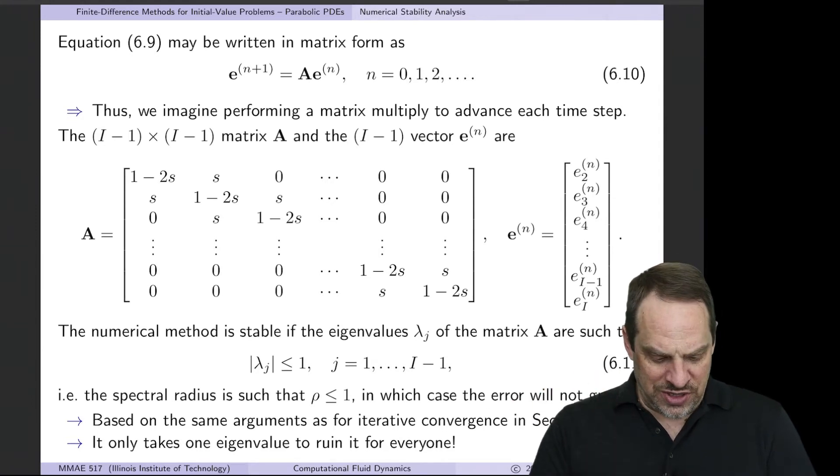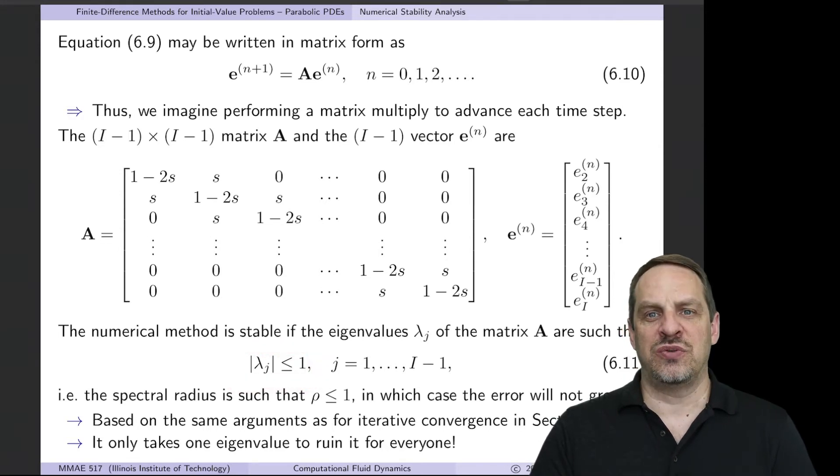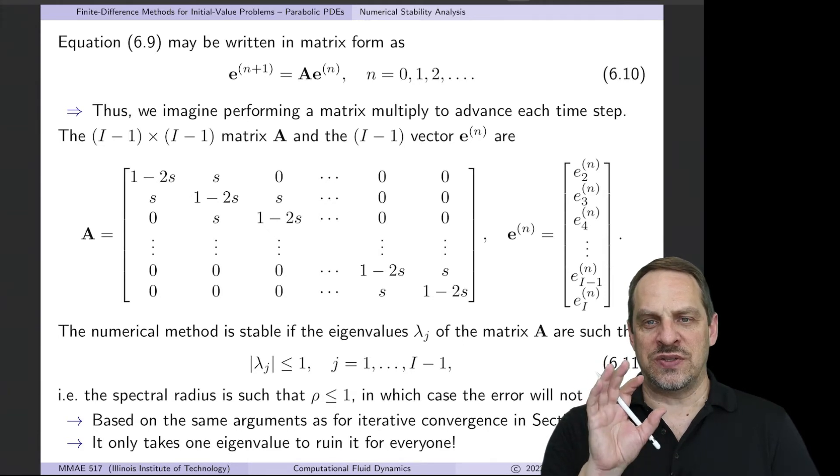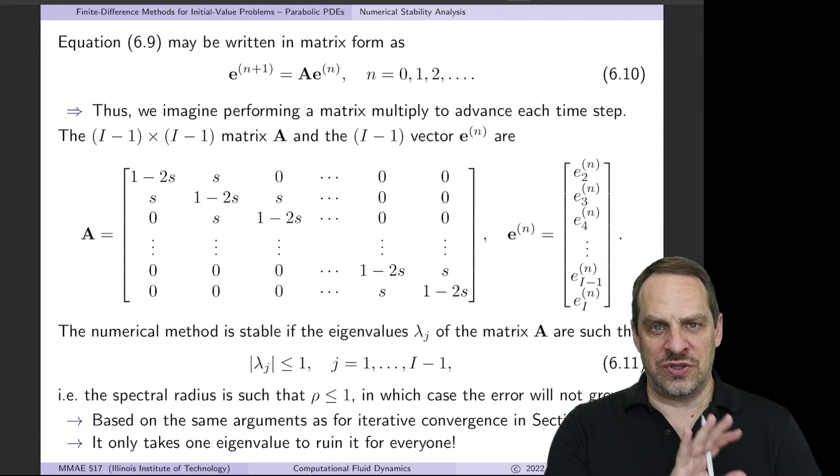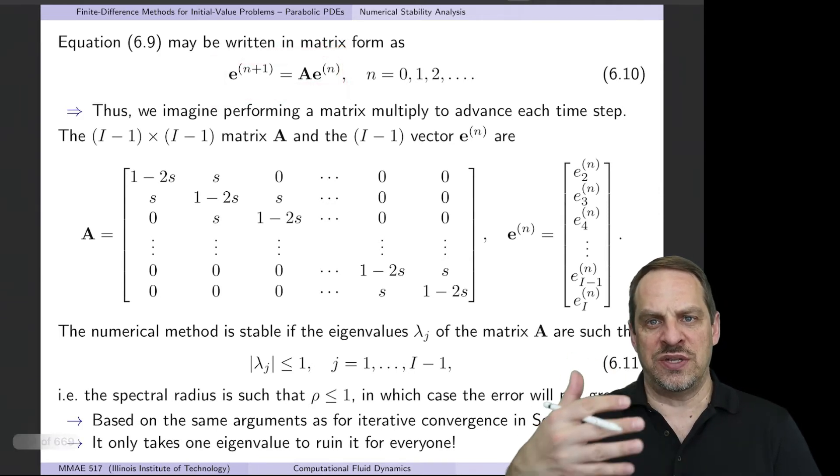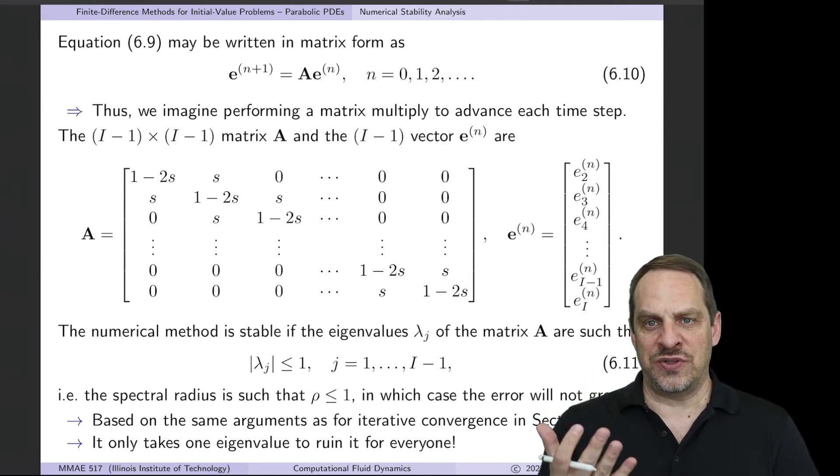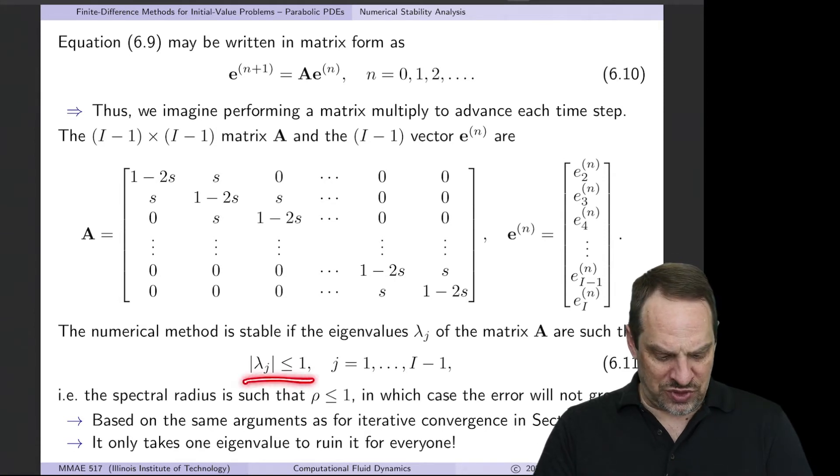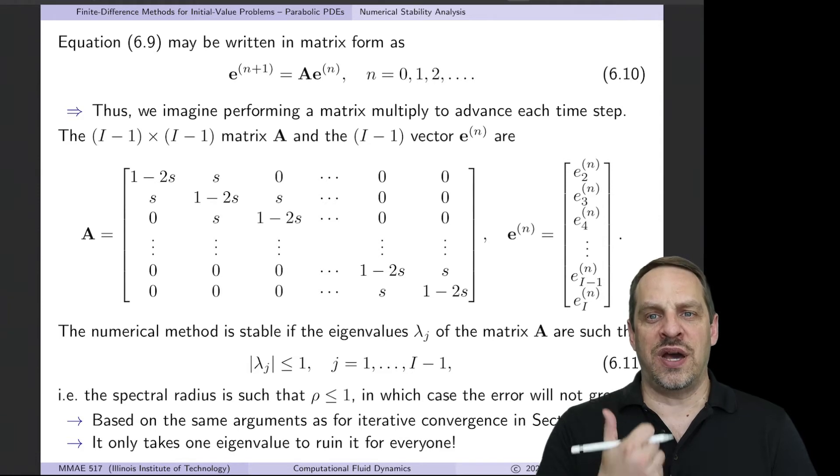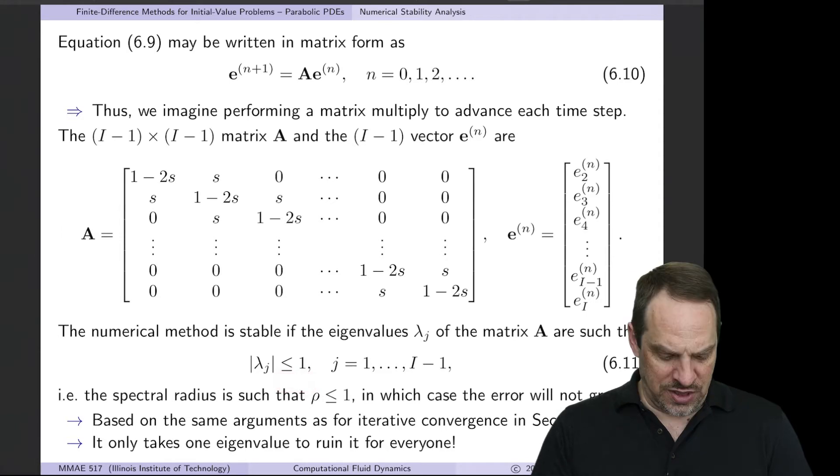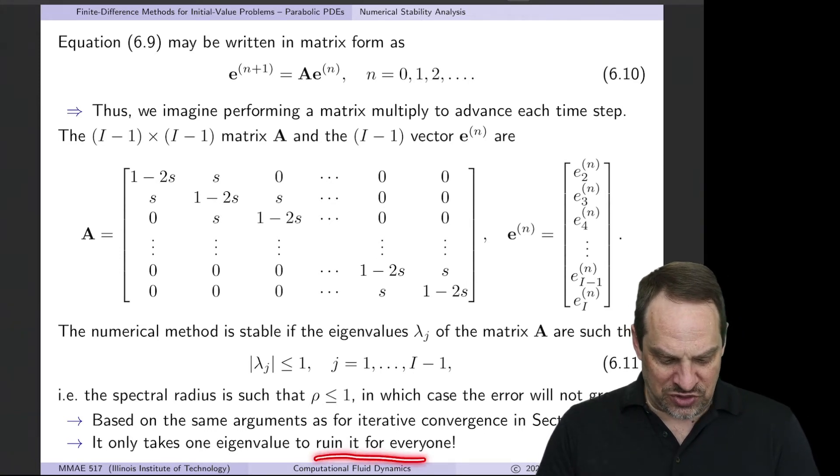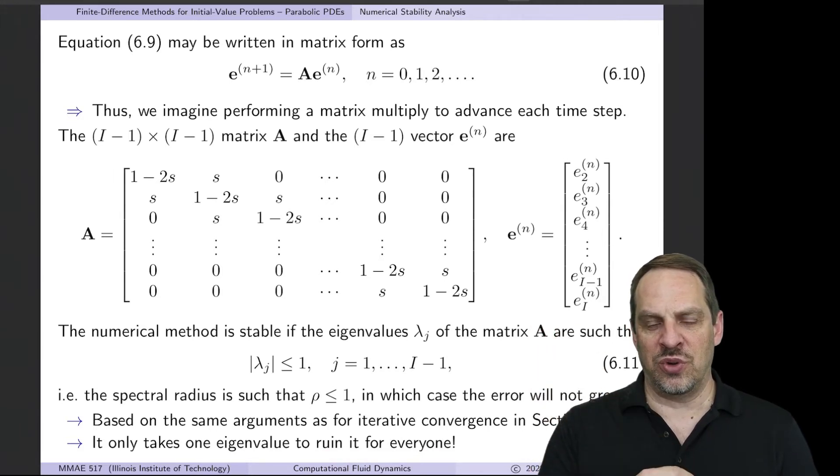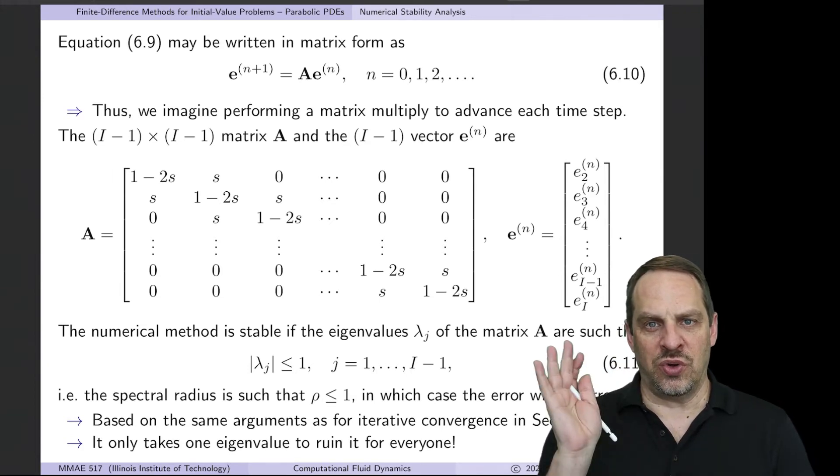The criteria in order for our numerical method to be stable is that the spectral radius, which is the largest eigenvalue by magnitude of this matrix A, has to be less than or equal to 1. Now why is that? It's the same argument that we made in iterative techniques applied to elliptic problems. Totally different scenario, iteration versus time-marching. However, in both cases, we can write the iterative process or the time-marching process in terms of a matrix problem. So because of that, if you follow the same proof as we did in the iteration case, we come up with the result that the spectral radius, the magnitude of all of the eigenvalues of, in this case, A, have to be less than or equal to 1. Now, there's capital I minus 1 such eigenvalues corresponding to the size of the matrix problem that we need to solve. What you realize from this is it only takes one of us to ruin it for everyone. So if all of the eigenvalues are less than or equal to 1, except for 1, that's all it takes. Just one unstable mode, and the whole thing goes kablooey.